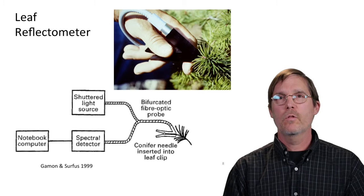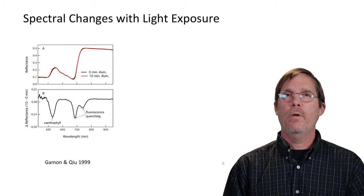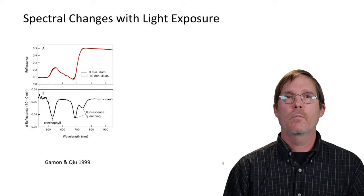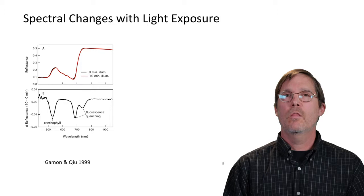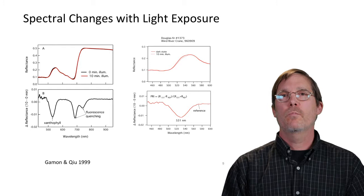Work like this has revealed similar responses. On a Douglas fir canopy you can see a very subtle change in reflectance — both in the fluorescence region, showing a double dip from fluorescence quenching, and the change in xanthophyll cycle pigments showing up at 531 nanometers. It's really hard to see that change in the original spectra, but if you blow it up you can see the subtle change in reflectance around 531 nanometers.